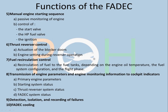Thrust Reverser Control involves actuation of the blocker doors and the engine thrust setting during reverser operation. Fuel recirculation control recirculates fuel back to the fuel tanks and is used for cooling — we will discuss this in the fuel system. FADEC also handles transmission of engine parameters to the cockpit: primary engine parameters, starting system status, and FADEC system status. It detects, isolates, and records failures in the engine.